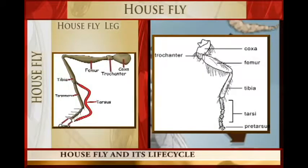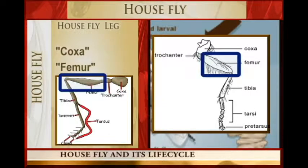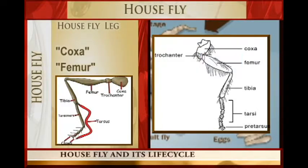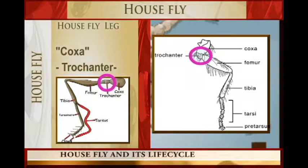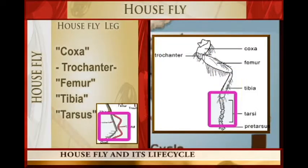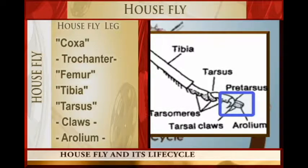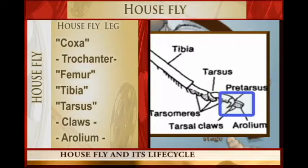The leg is divided into sections. We have the upper section called the coxa. The coxa connects to the femur, but between the tip of the coxa and the femur there is a small joint called the trochanter. Beyond the femur, you have the tibia, and after the tibia you go to the tarsus, then to the claw. In the claw there is what we call the arolium in the middle, and there are glandular pads which produce the sticky substances.